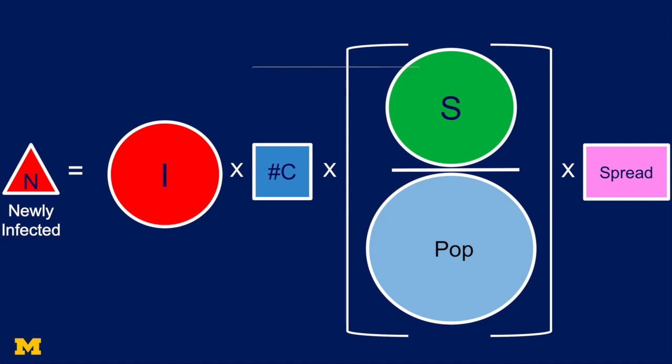But even when two people meet, it doesn't necessarily mean that the disease is going to spread. So we've got to multiply this by the transmission probability. We can just call this the spread, the likelihood if two people are in contact, one who has the disease and one who doesn't have the disease, that the disease spreads.